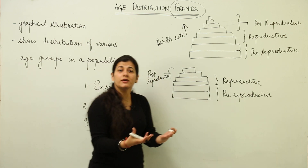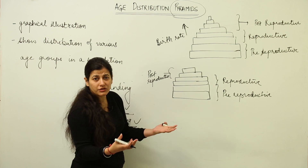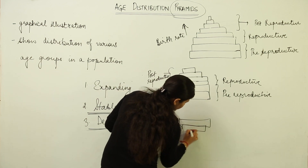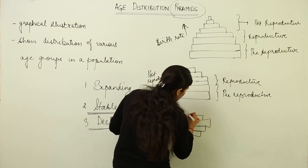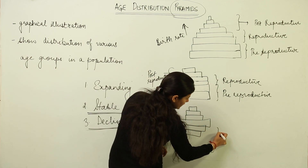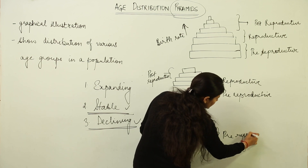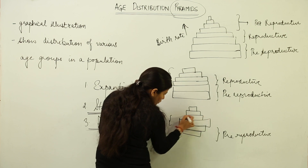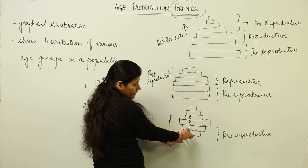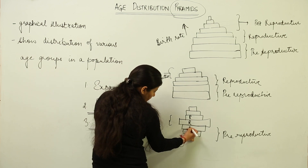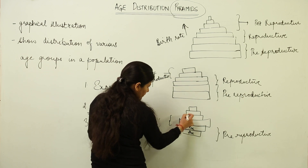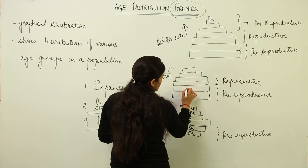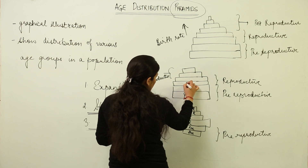Then we come to countries like Japan and the Scandinavian countries, where they are actually paying people to increase their population because the pre-reproductive population is the least. The reproductive population is dominant, with the pre-reproductive being smallest. This shape is at times referred to by some authors as a bell shape. The reproductive age groups are large in number, but the pre-reproductive is comparatively much smaller.